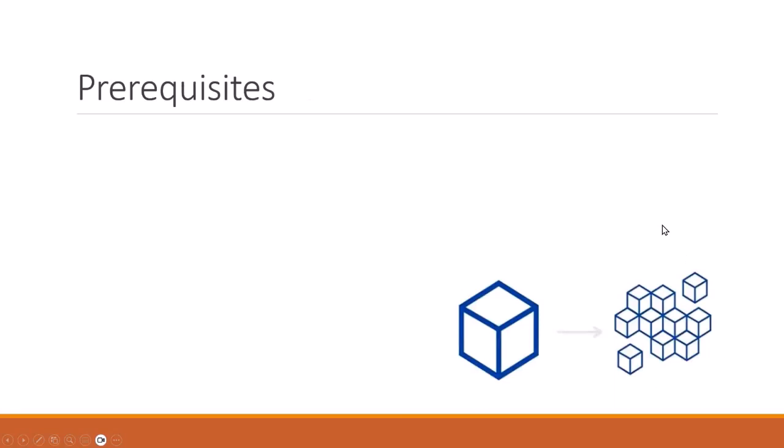Prerequisites for Docker: first you should be aware of SSH. SSH is the way we can connect two servers. It can be password or passwordless — usually it is preferred to have a passwordless connection between Linux servers. SSH is a more secured way of communication. SSH — Secure Shell — is one of the protocols. Whenever you are connecting with PuTTY or a terminal on cloud, OpenSSH will be used.